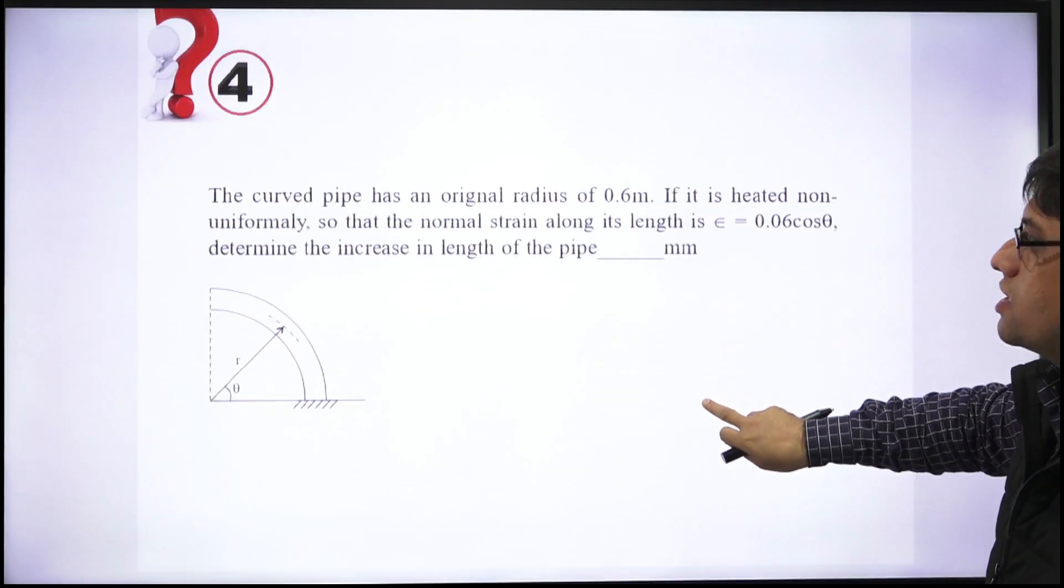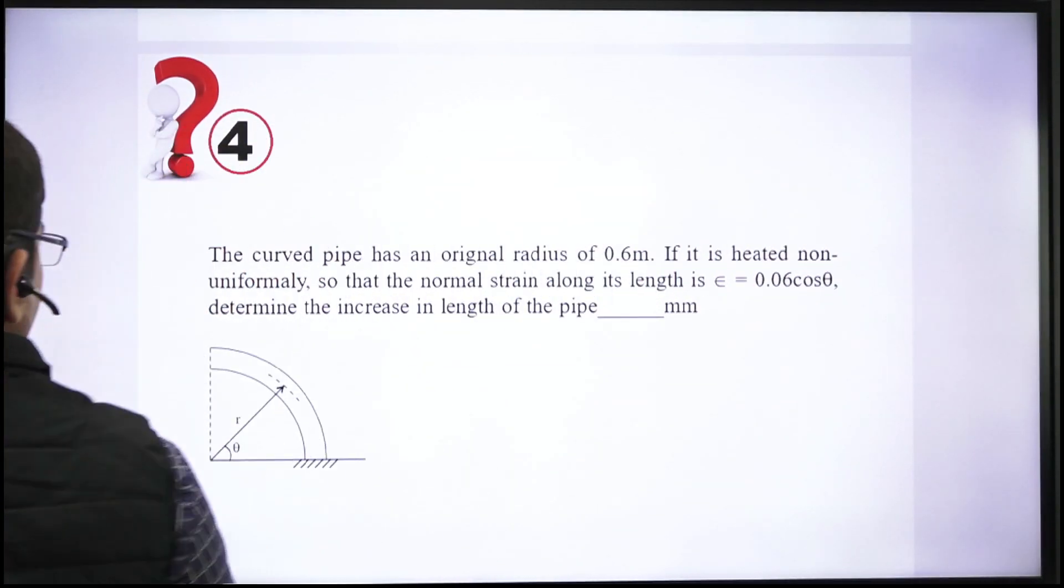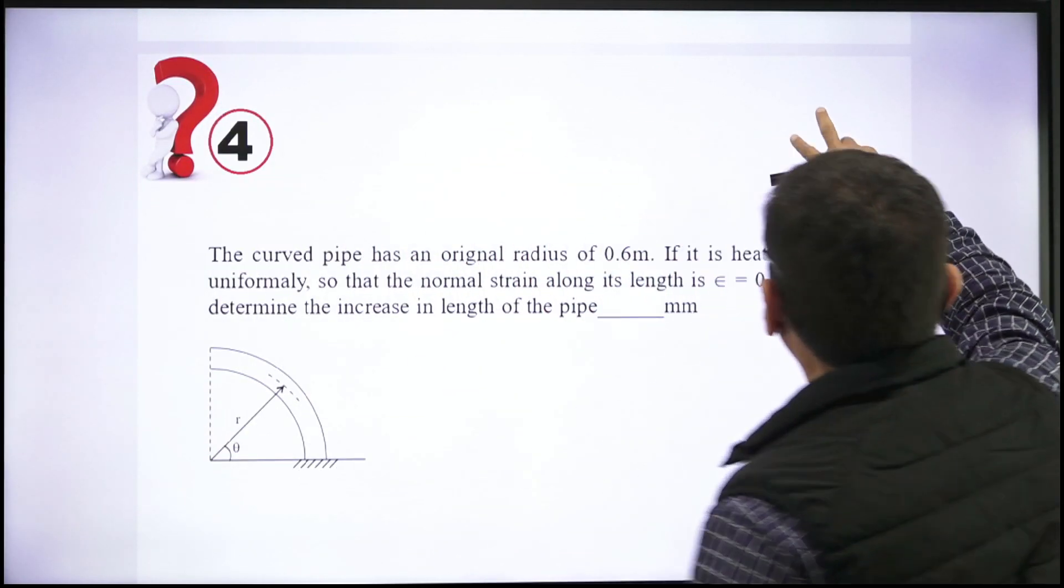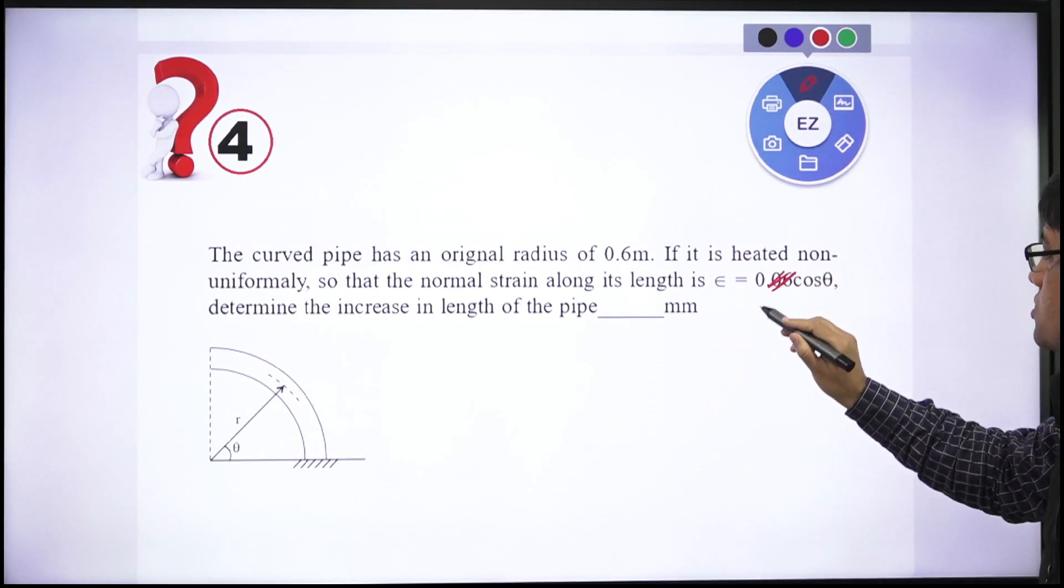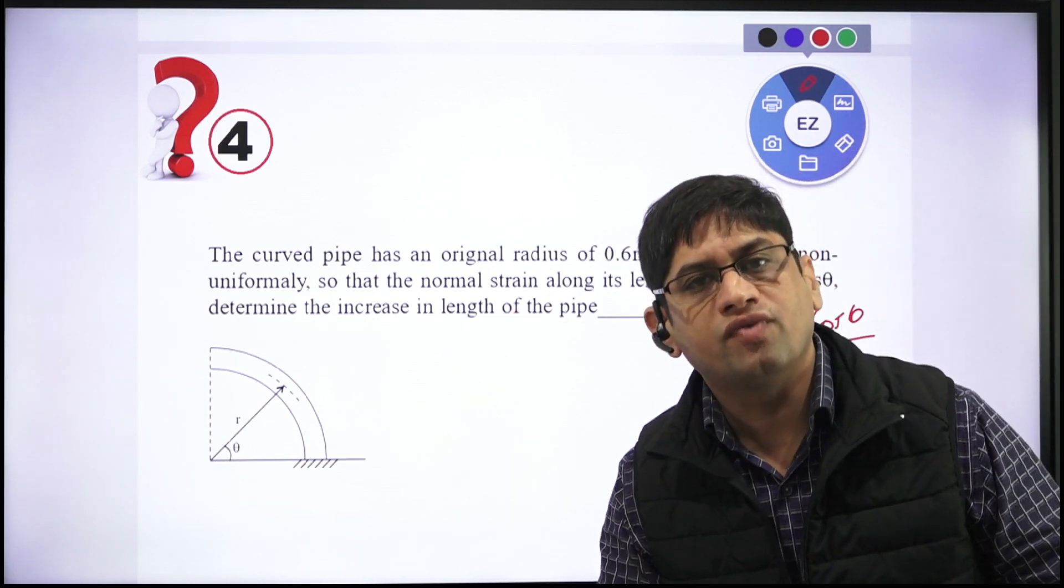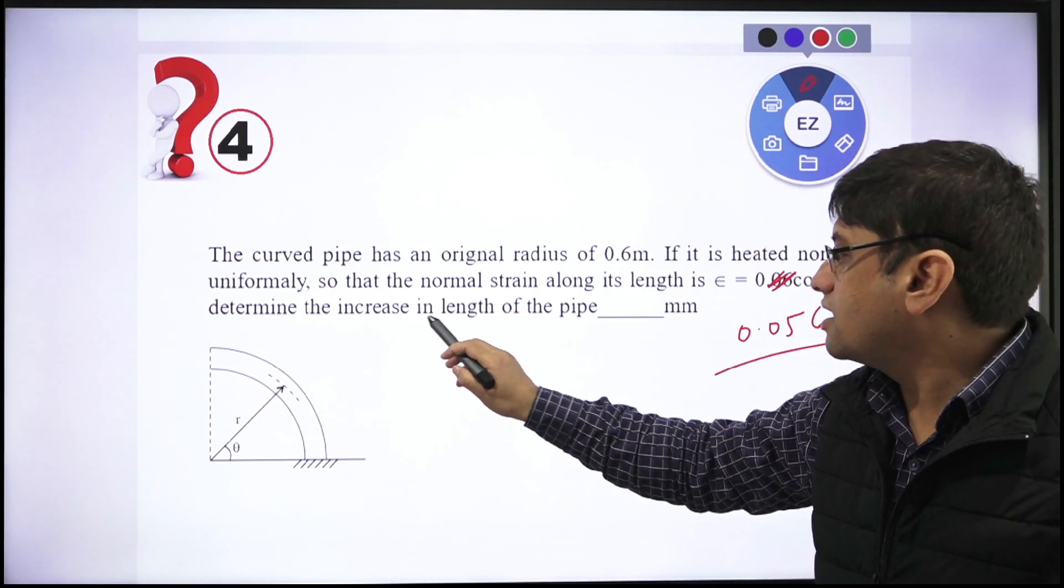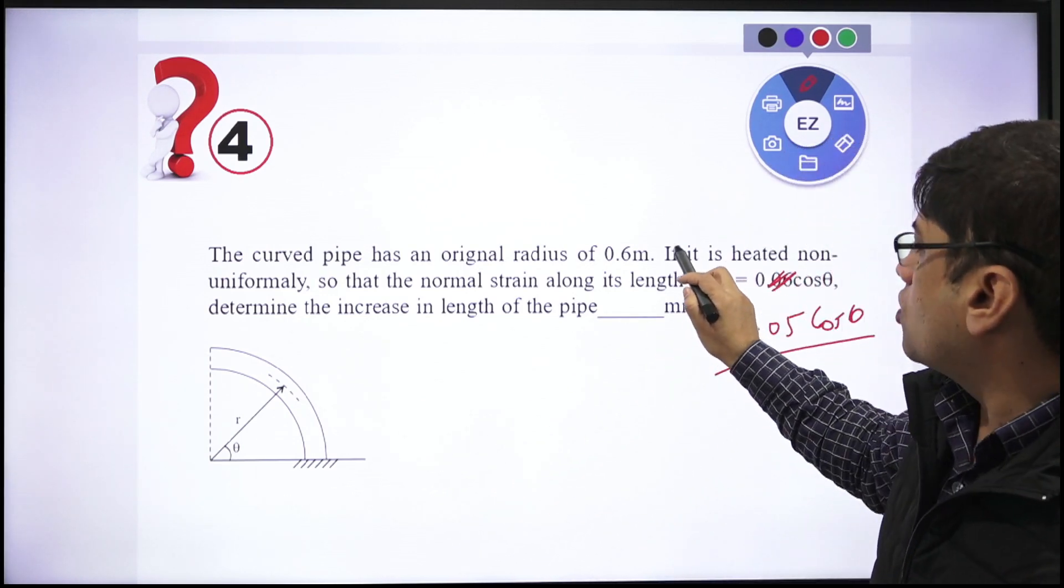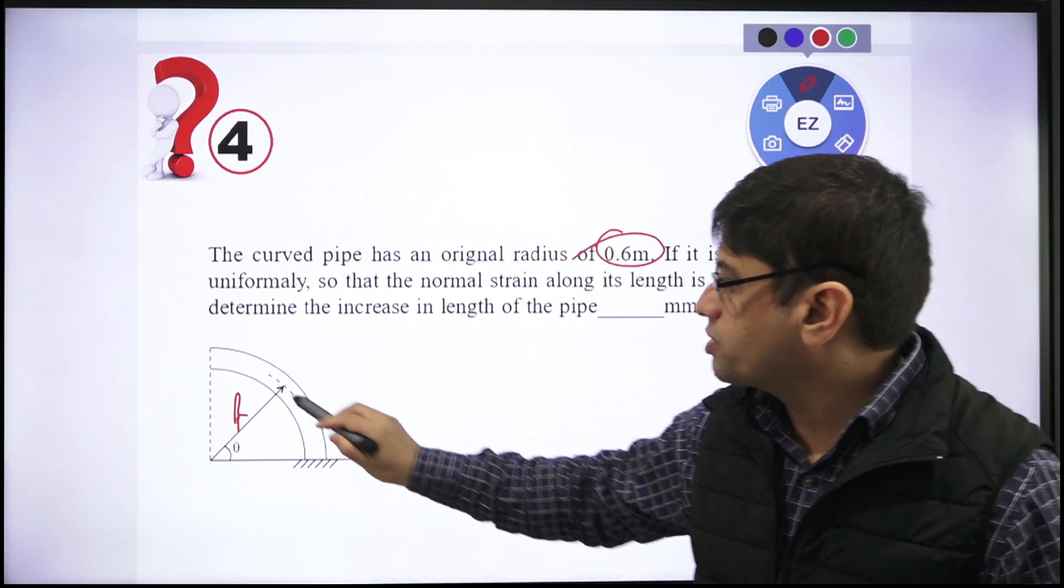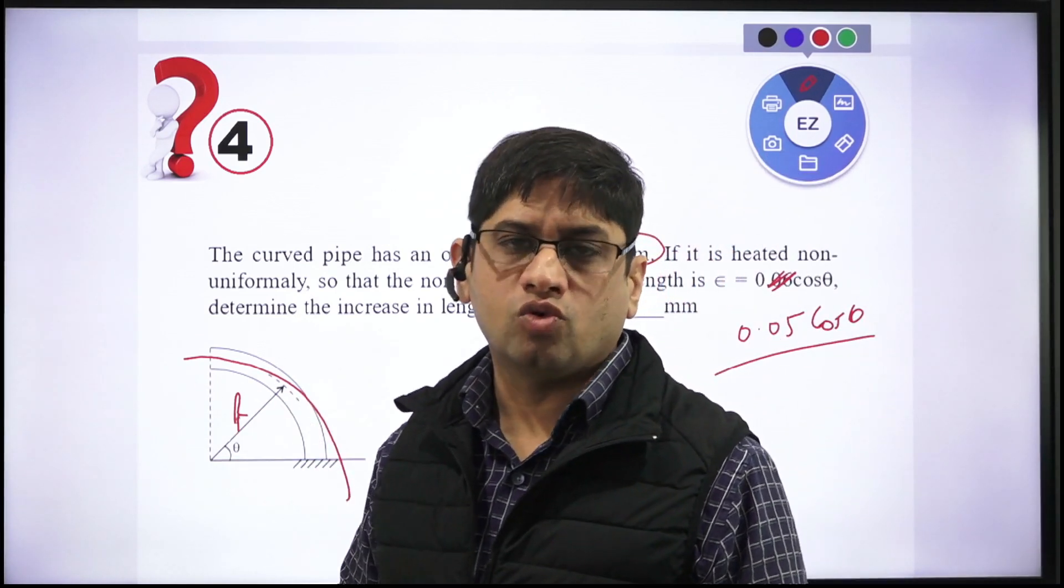Next question: There's a curved pipe which is given to us. Its original radius is 0.6 meter. It is heated non-uniformly so that normal strain along its length is 0.05 cos theta. Let me tell you, this is not 0.06, this is 0.05 cos theta. Determine the increase in length of the pipe. Original radius r is given as 0.6 meter. If you heat it, how much will its length increase? This is a question which is given to us. Think of it as integration you have to do.